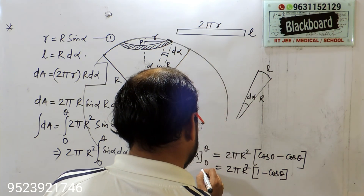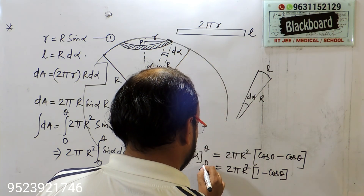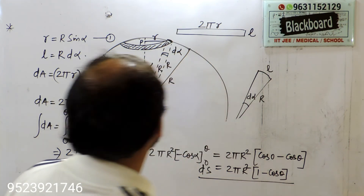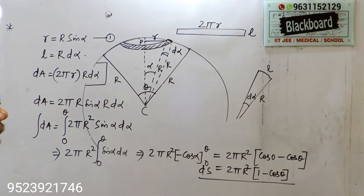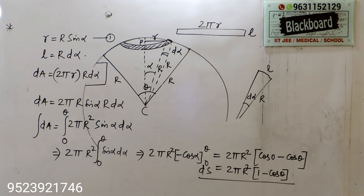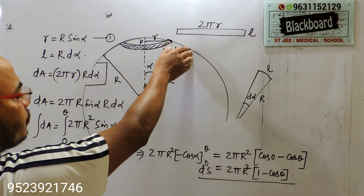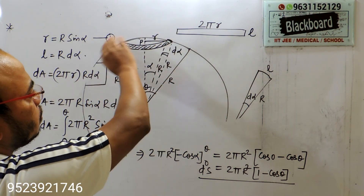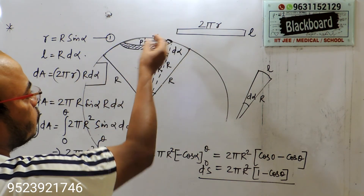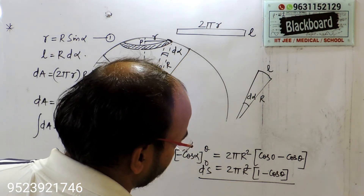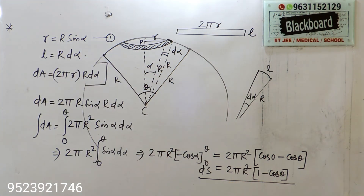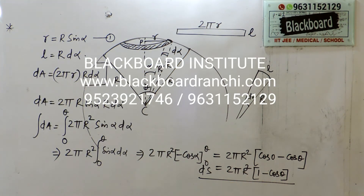This is the area — this is your dS. If theta is the angle formed for a sphere, in that case your spherical part's area will be 2πR²(1 − cos θ).